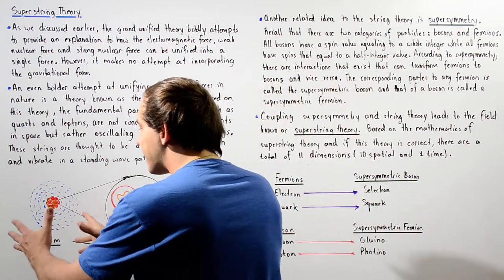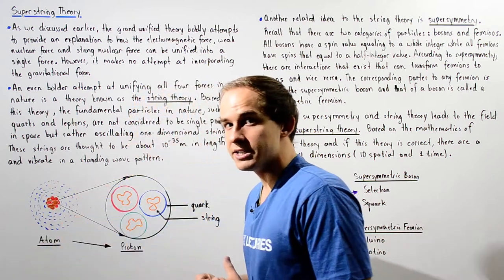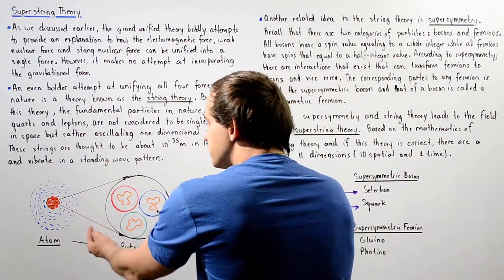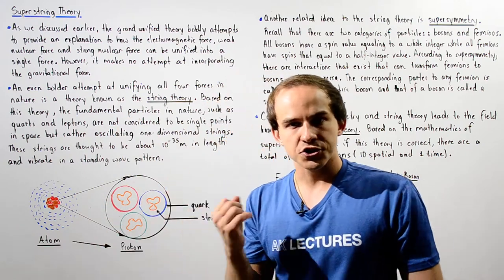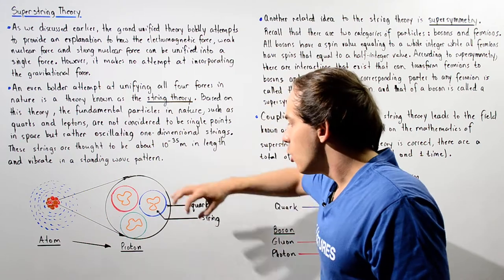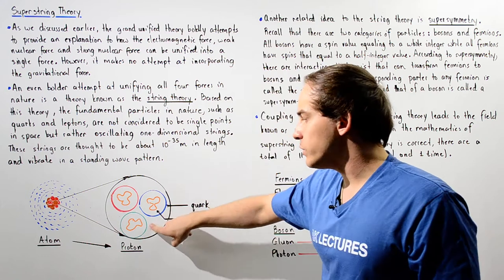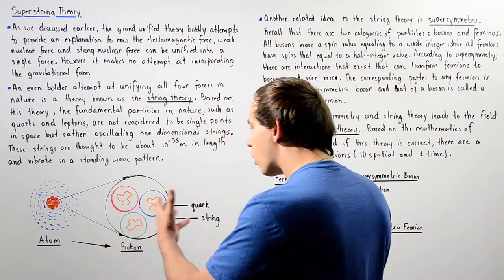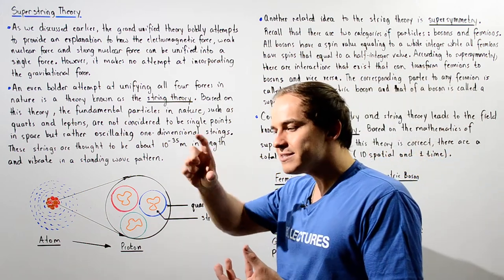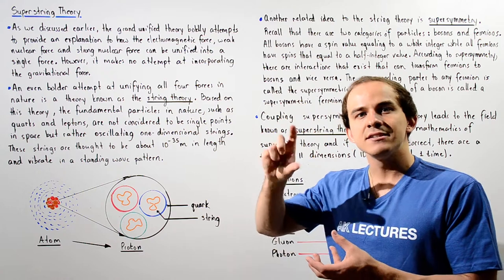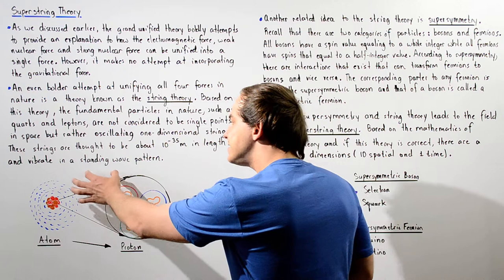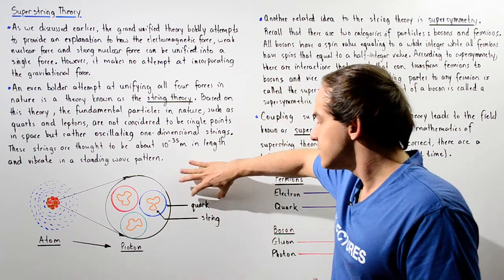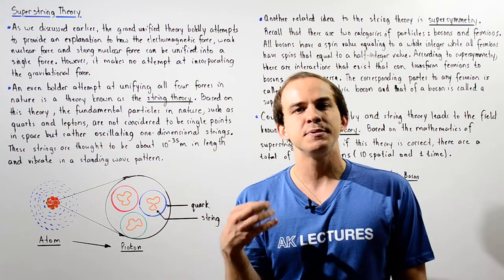If we take our atom, which has the electron density and the protons and neutrons in the nucleus, and we zoom in on one of those protons, we get the following diagram. We have our proton, and within the proton we have three quarks — an up quark with color red, an up quark with color blue, and a down quark with color green. Based on string theory, if we look inside one of these quarks, what we see is an oscillating string of energy, oscillating in a similar way that a standing wave will oscillate. This string of energy inside any fundamental particle, such as the quark, is oscillating with a certain specific frequency.